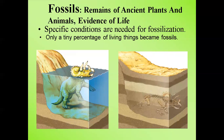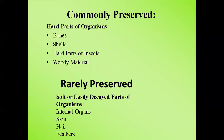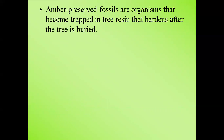The commonly preserved parts of organisms are the hard parts — bones, shells, hard parts of insects, and woody materials. Soft or easily decayed parts such as internal organs, skin, hair, and feathers are rarely preserved because they decompose quickly.